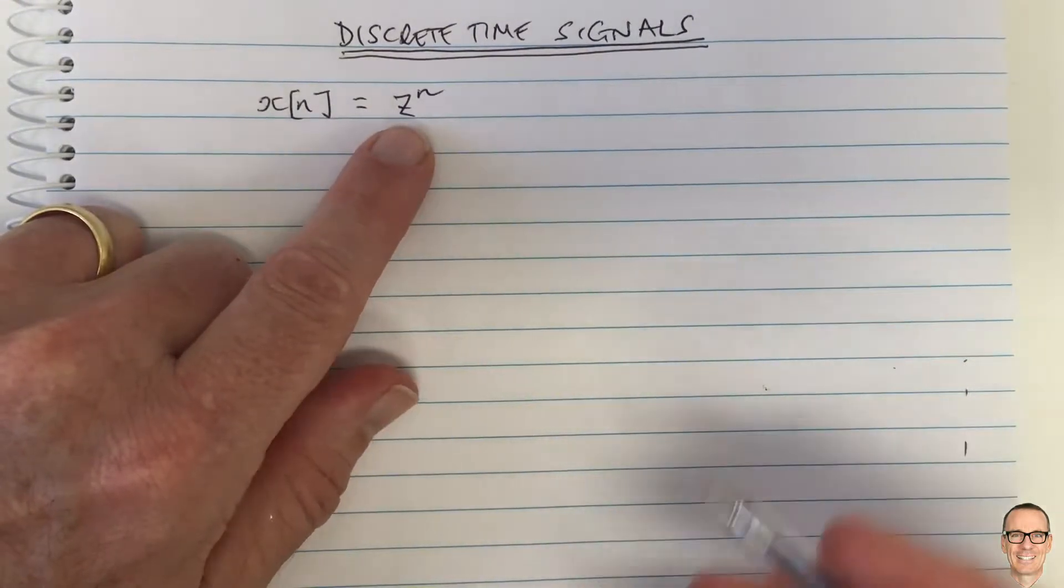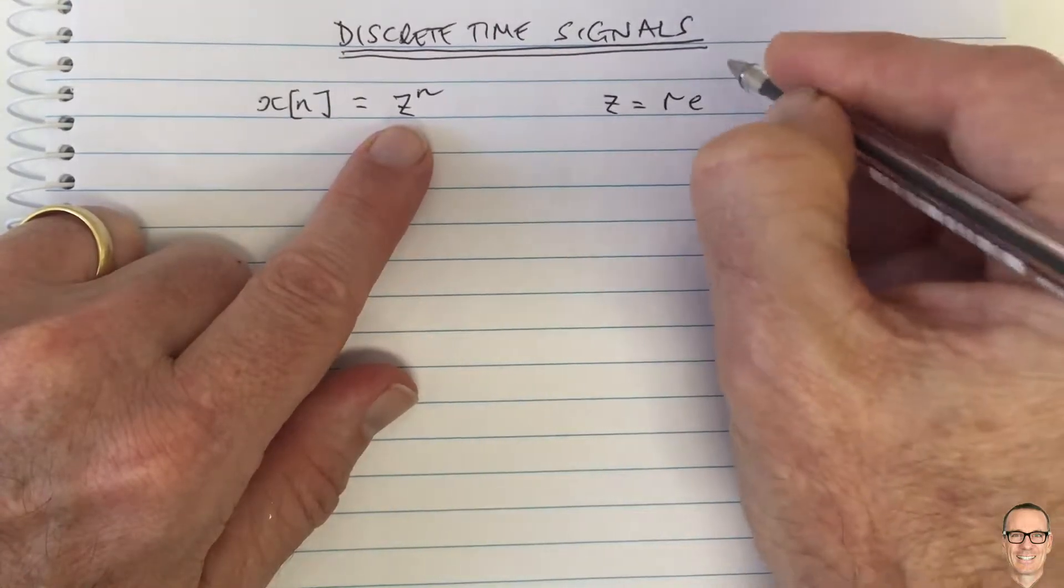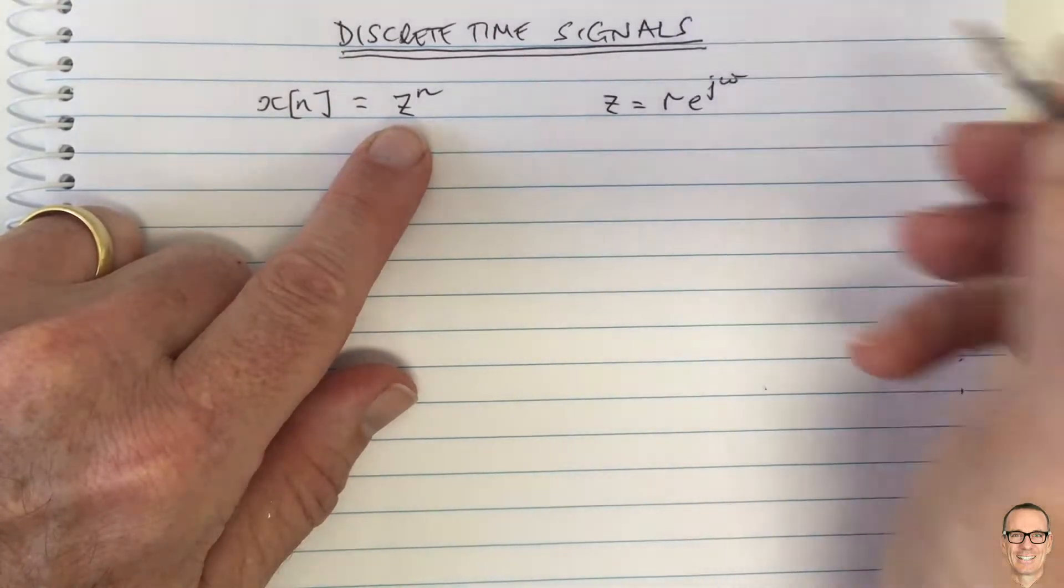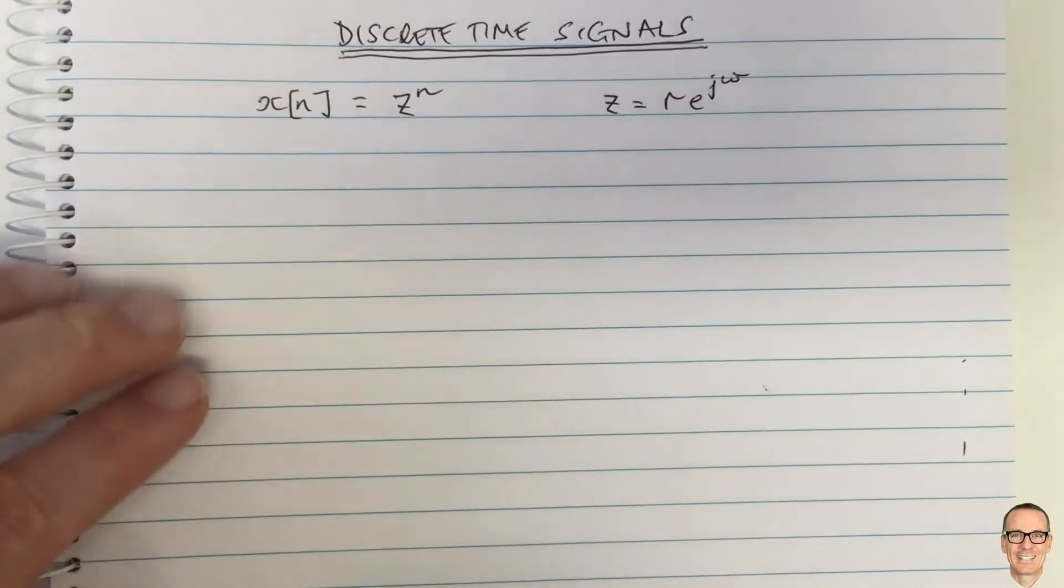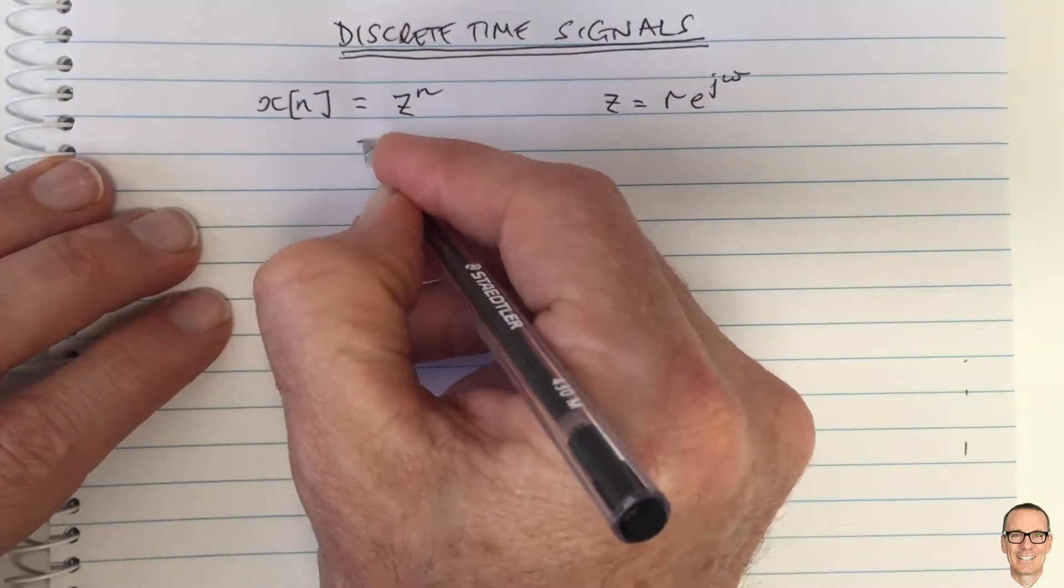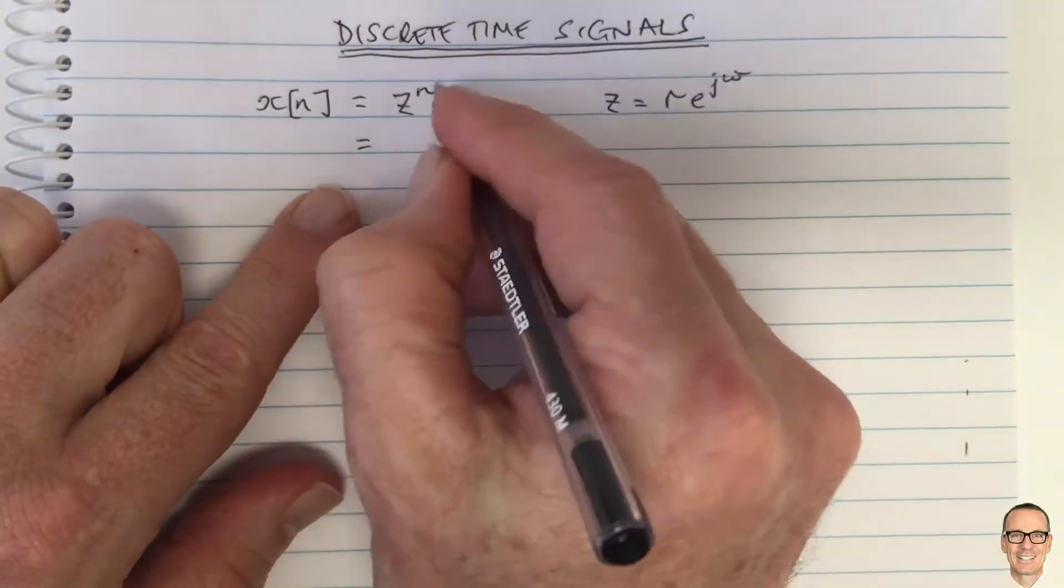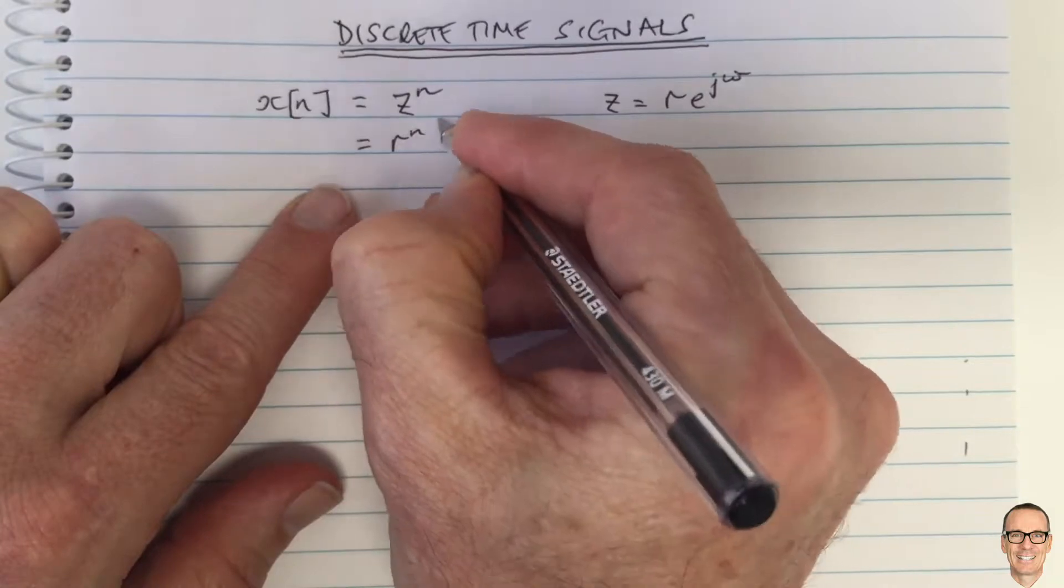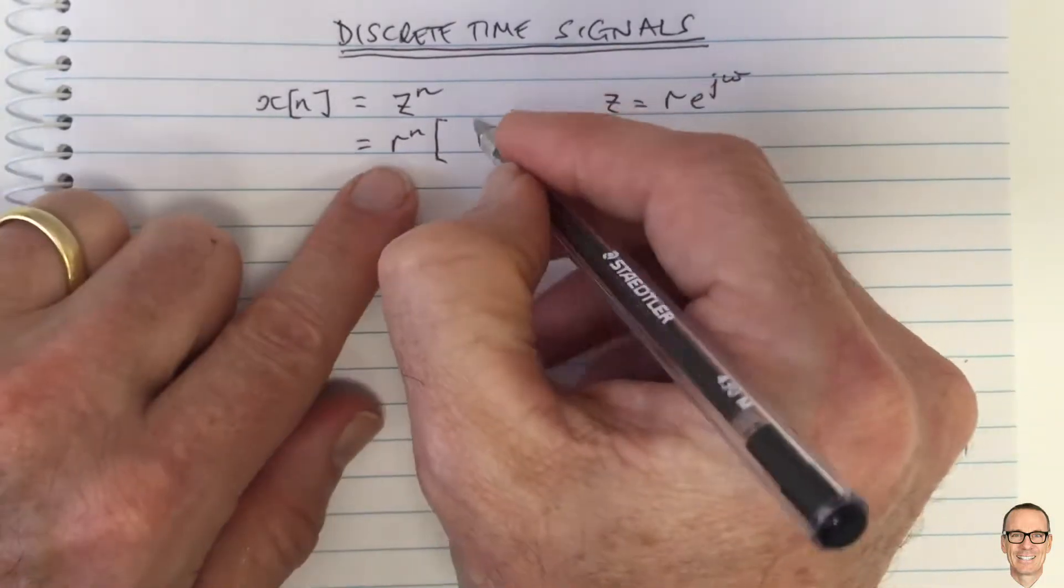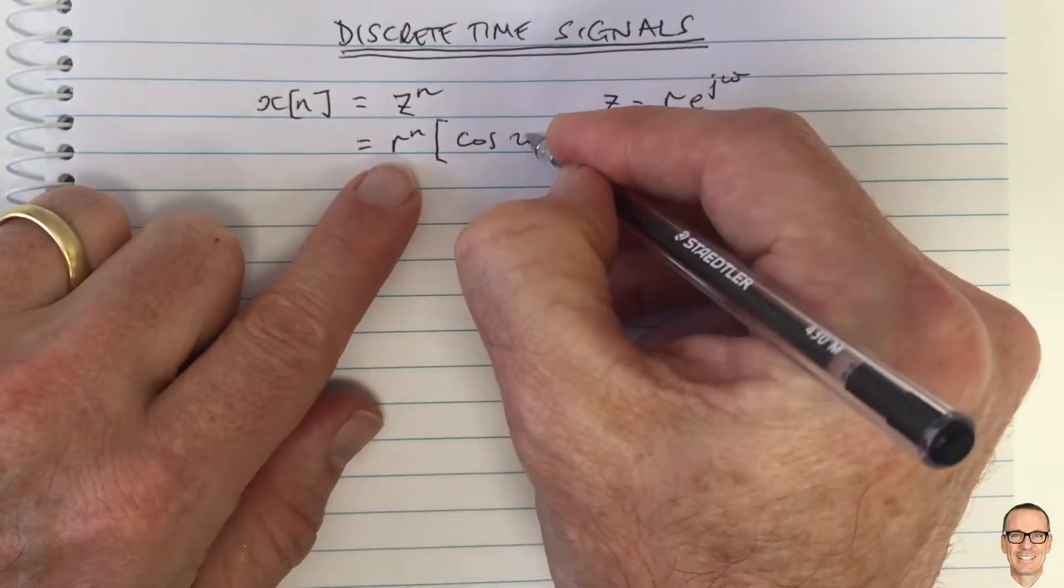z to the power of n, where z equals r e^(jω). Why is this such an important signal? Let's write this out. This equals, if we plug this z in, z^n = r^n times [cos(ωn) + j sin(ωn)].